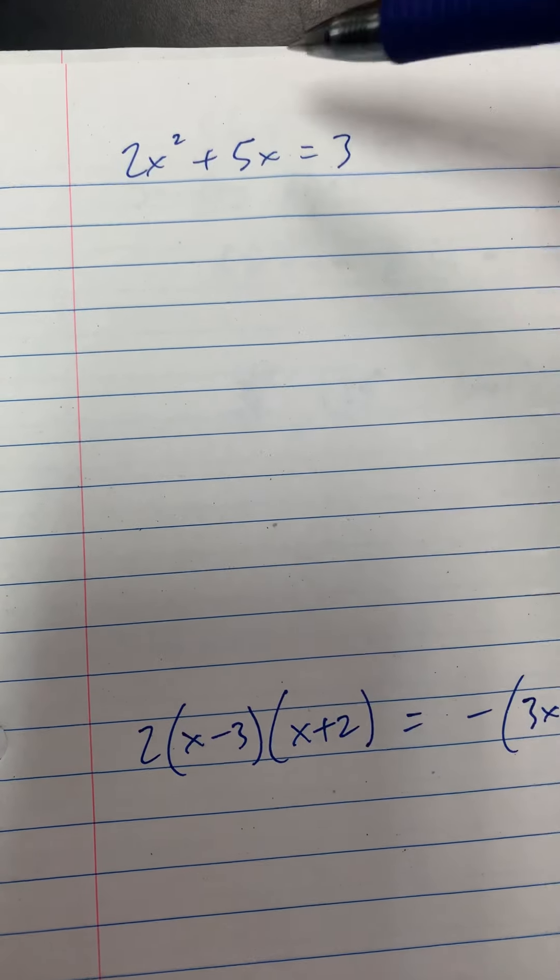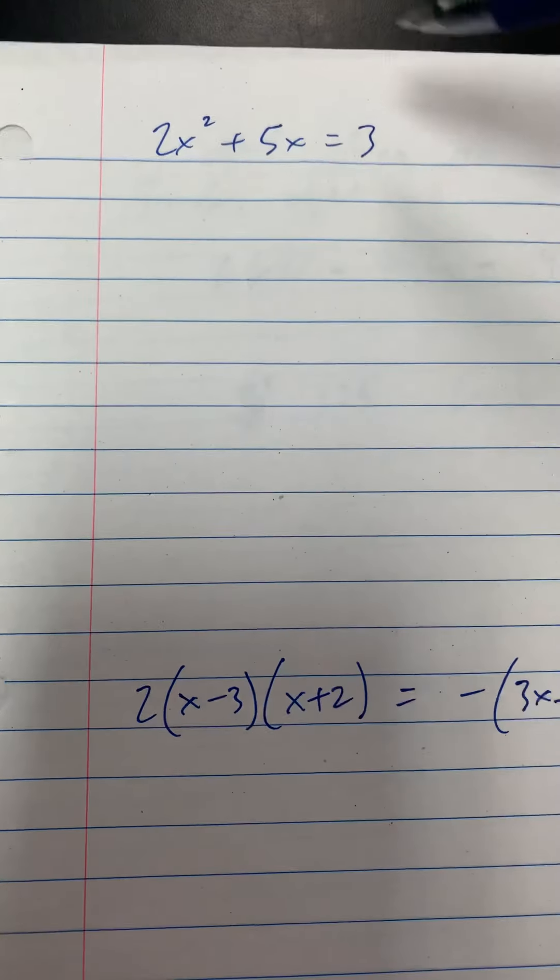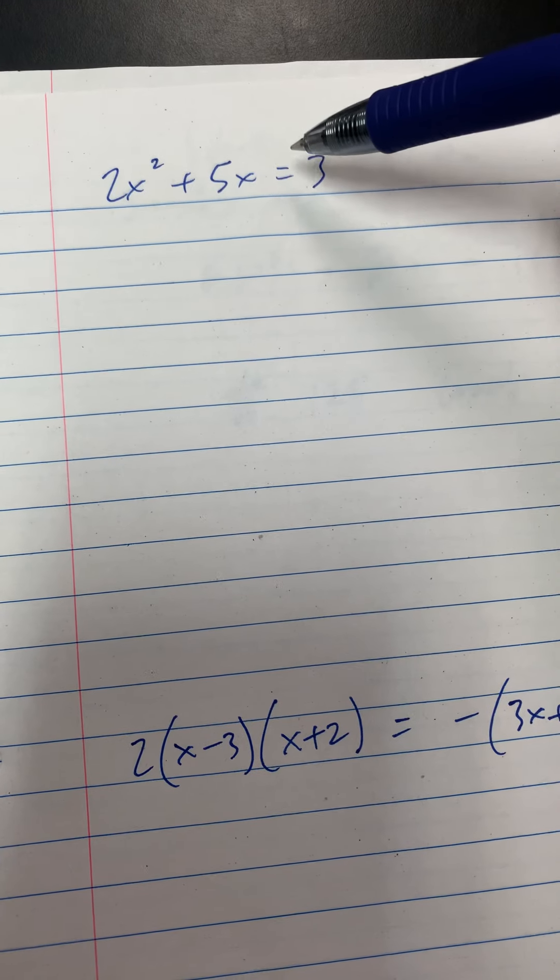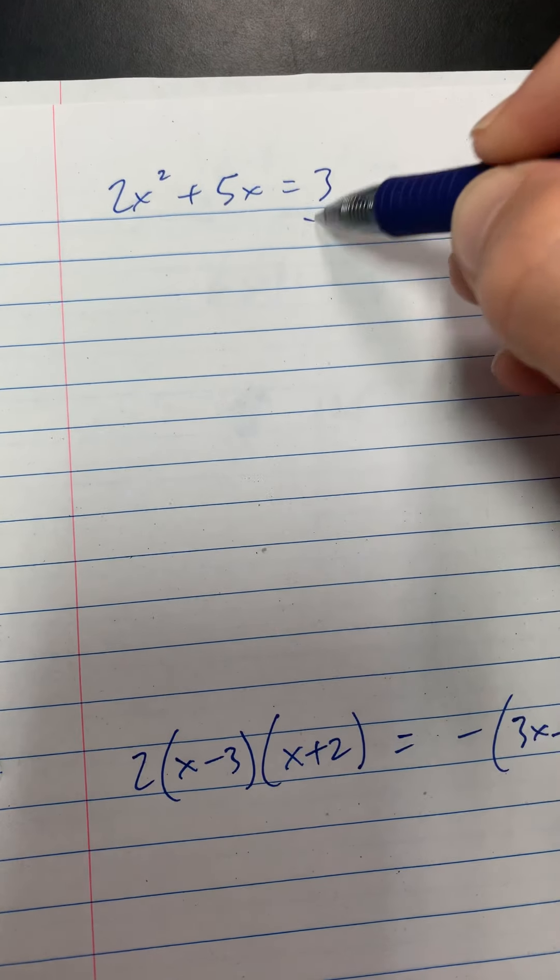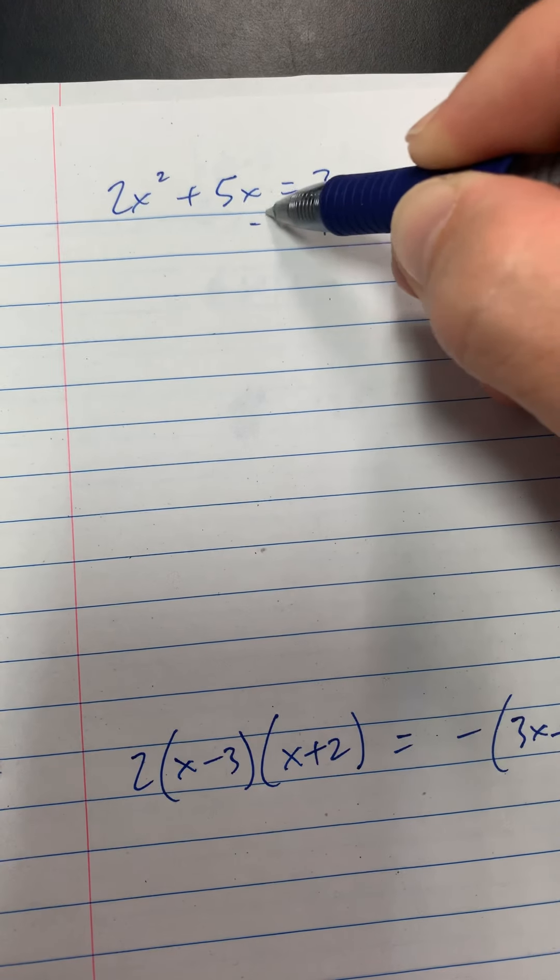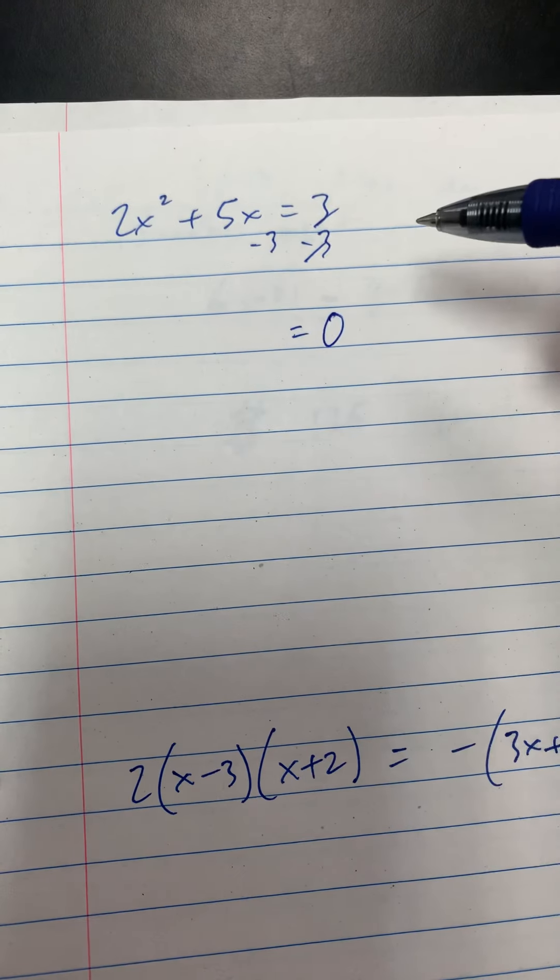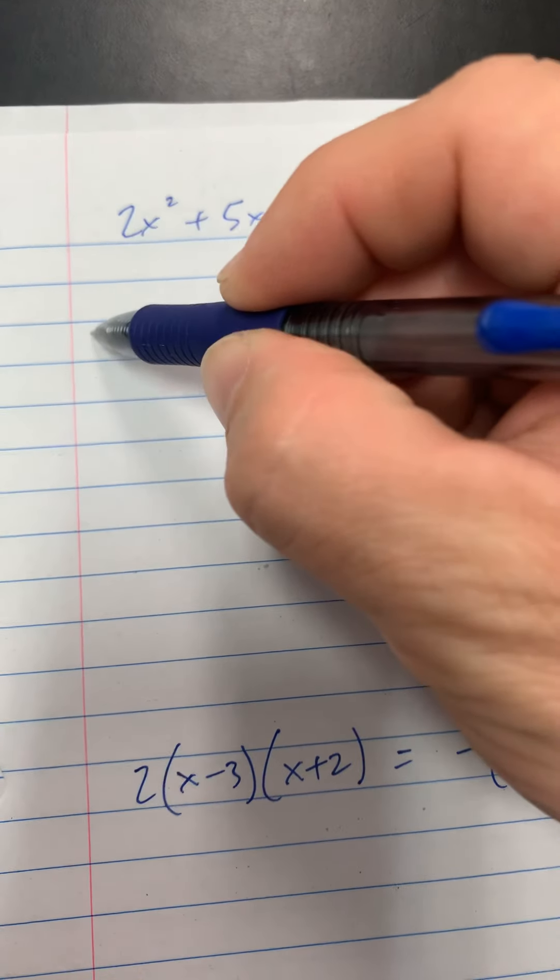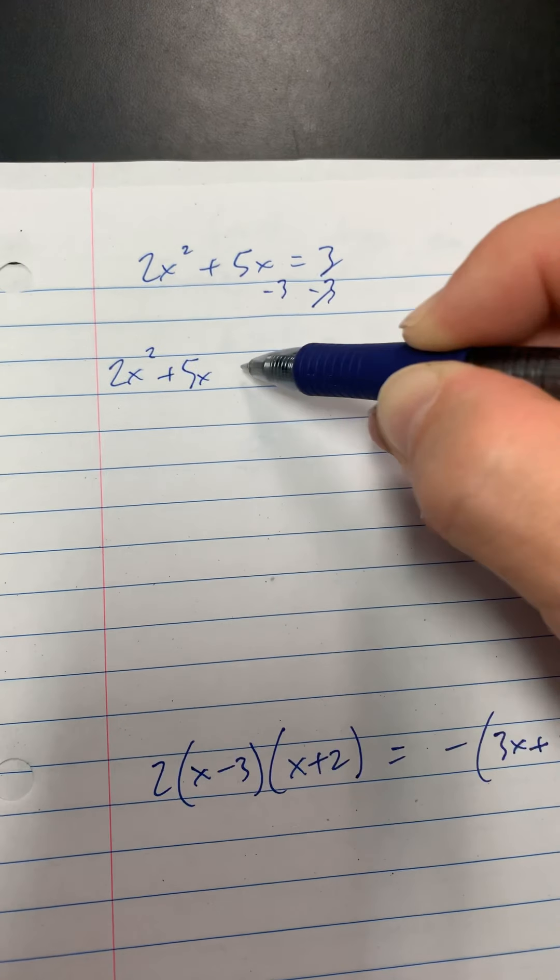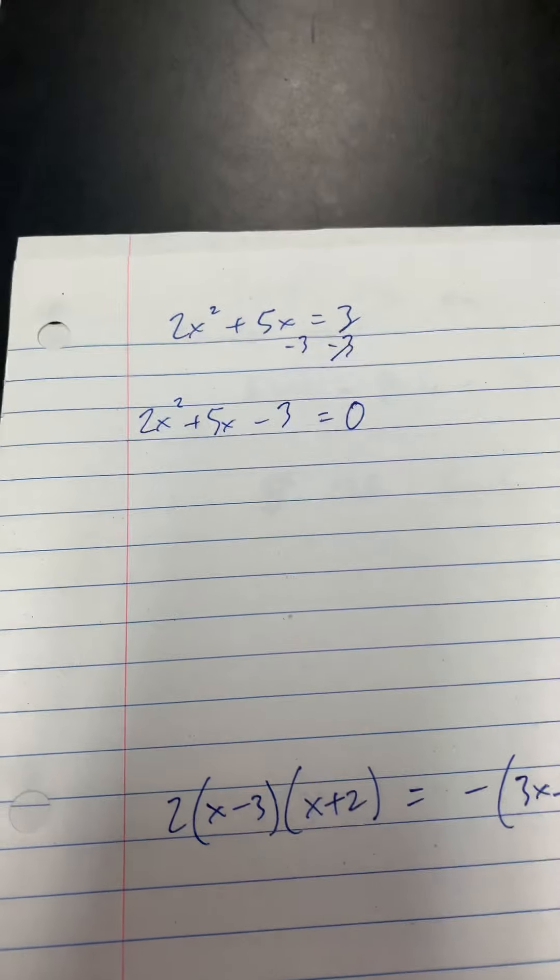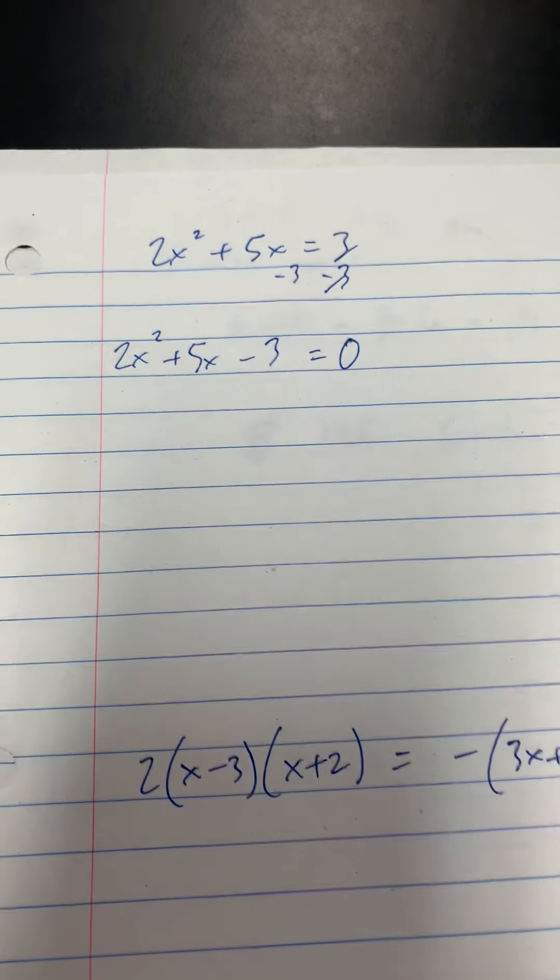The first thing we want to do is set this up so we have everything equal to 0. So I'm going to subtract 3 from both sides. And what that does is that gives me 0 over here, which is what I want. I'm going to rewrite this as 2x squared plus 5x minus 3.